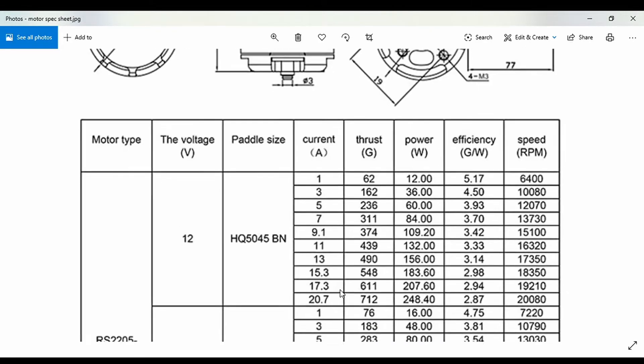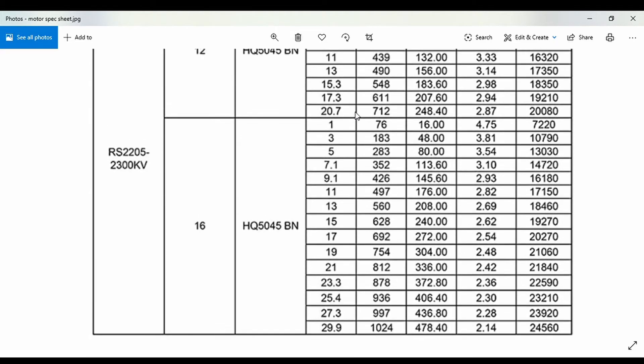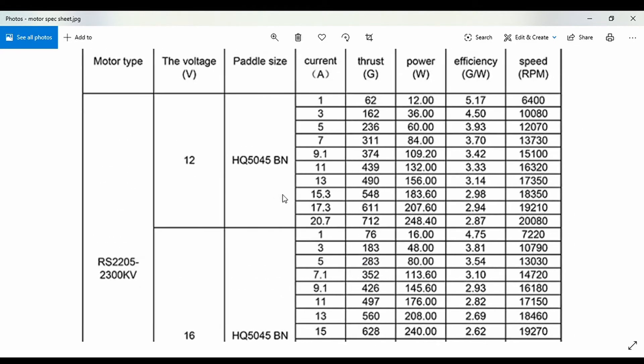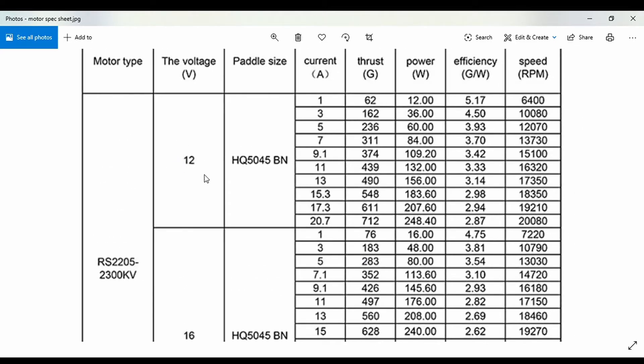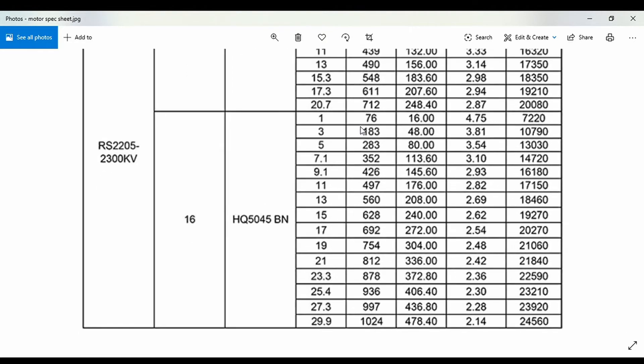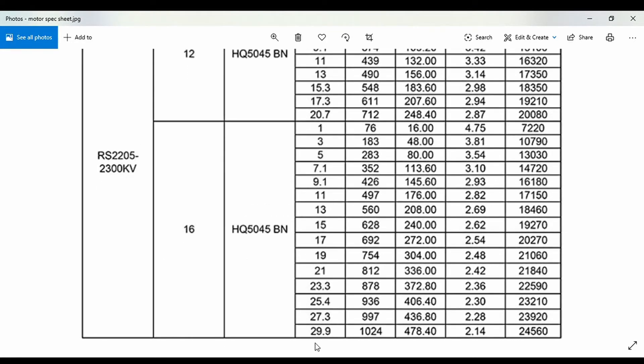This maximum current value will tell you which particular ESC you should select. If you've decided to use a 3S battery, you know the ESC values to use. You should note down this max current. If using a 4S battery, note down this value. Later in the ESC section, we'll learn how to select the ESC depending on what's mentioned in the motor spec sheet.